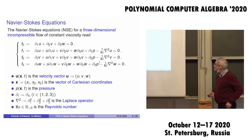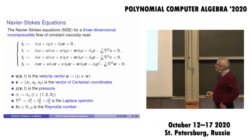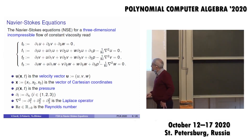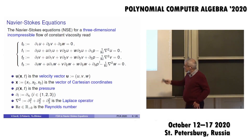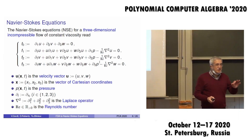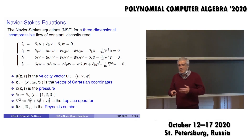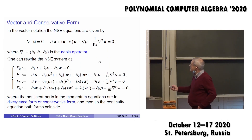Now let us go to the Navier-Stokes equations. I consider the incompressible case with constant density. It is a quadratically nonlinear system in three dimensions. U is the vector of local velocities of the liquid, P is the pressure, x is the vector of Cartesian coordinates, and the key parameter is the Reynolds number. A big Reynolds number gives turbulence; intermediate and low Reynolds number gives laminar flow.